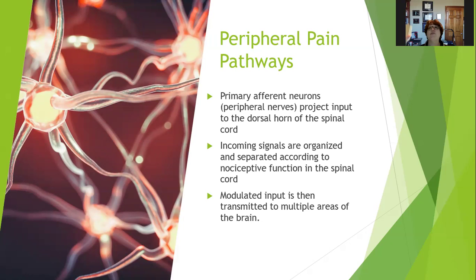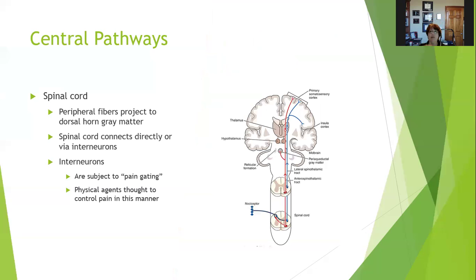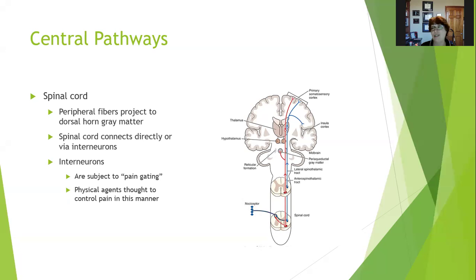Primary afferent neurons project input to the dorsal horn of the spinal cord, where incoming signals are organized and separated according to nociceptive function. Modulated input is then transmitted to multiple areas of the brain. There's a lot of processing that goes on in the dorsal horn, including what we call gate control. Physical agents like ice, heat, and electrical stimulation are thought to control pain by gating at the spinal cord — you close the gate and the pain never gets up to the brain.